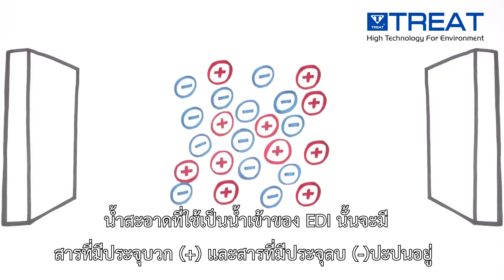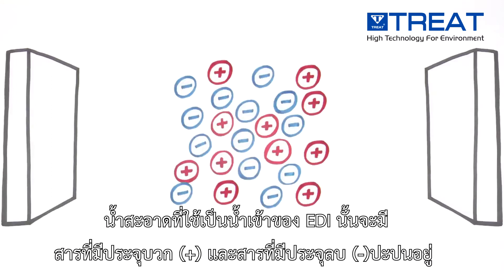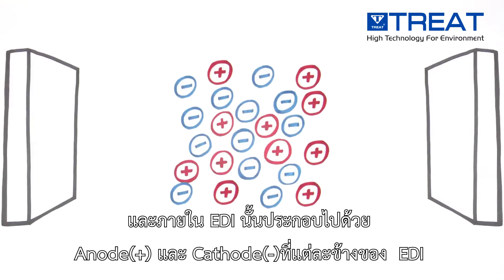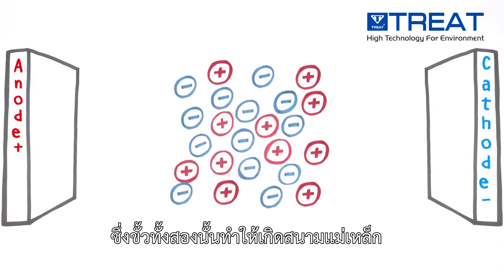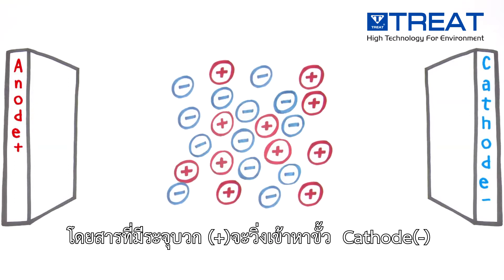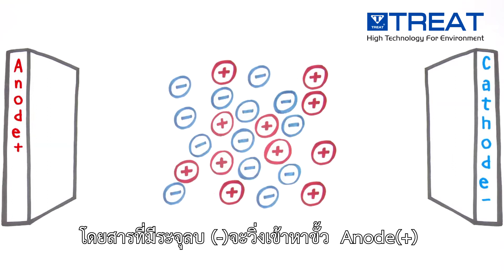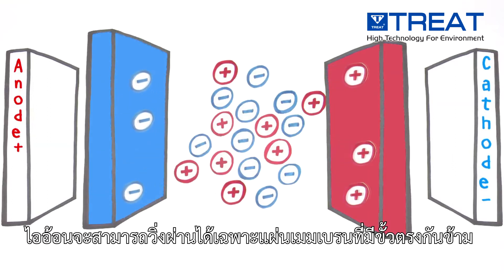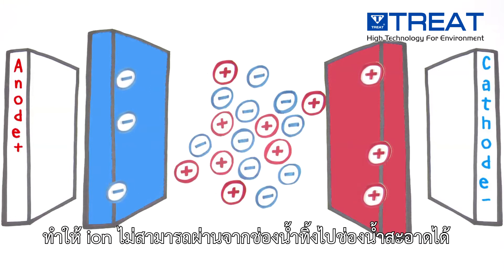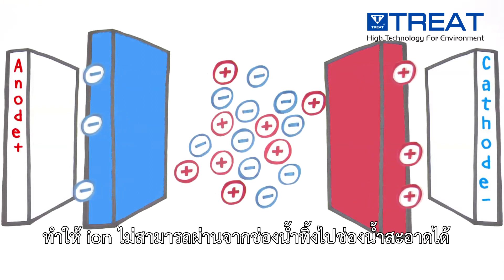Pre-treated water containing positively and negatively charged ions flows into CEDI modules constructed with an anode on one end and a cathode on the other end to provide an electric field. Opposites attract, so positive ions move toward the cathode and negative ions toward the anode. Ions can only pass through an oppositely charged membrane, so the alternating cation-selective and anion-selective membranes trap the ions.